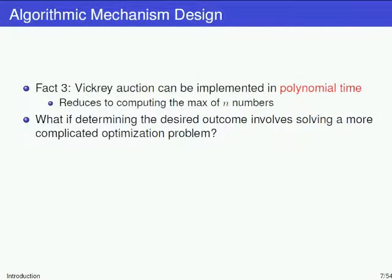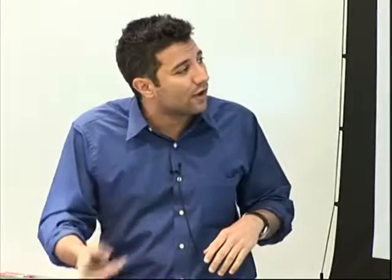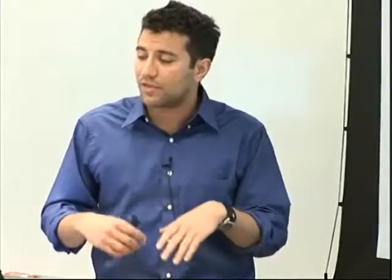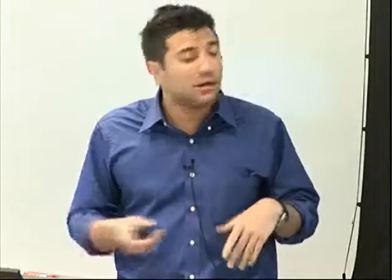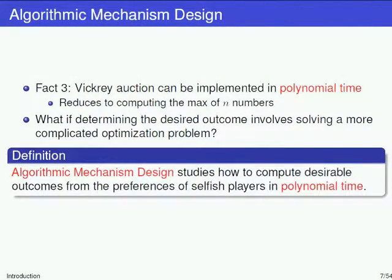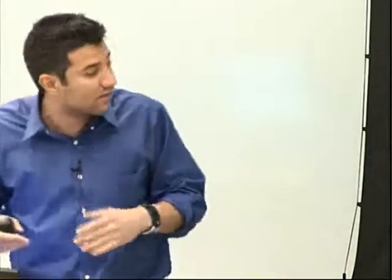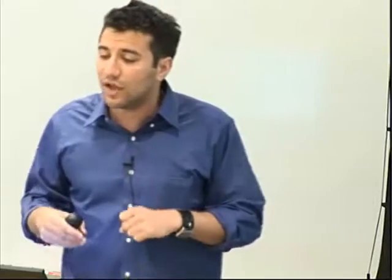The Vickrey auction can clearly be implemented in polynomial time — it's basically just computing the maximum of N numbers. Things become more interesting when computing the outcome involves solving a more complicated problem, maybe with more than one item or interdependencies between them, making the problem NP-hard. That's where algorithmic mechanism design comes in: computing desirable allocations of resources where players' preferences are private and selfish, and you want to do it in polynomial time.